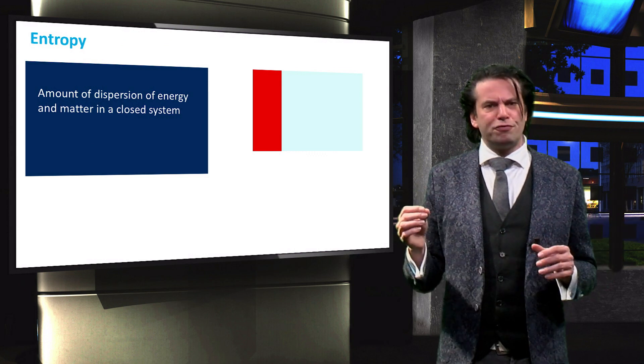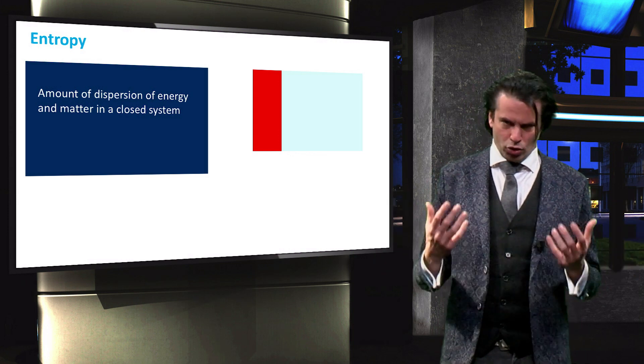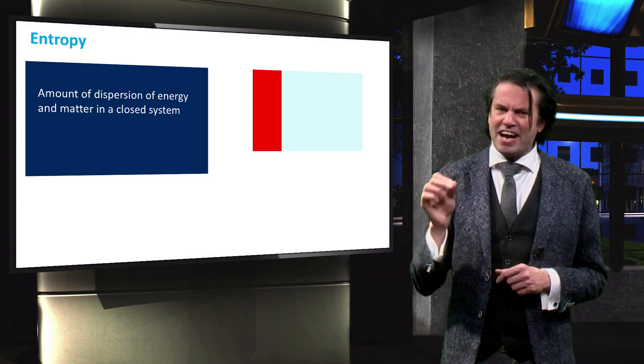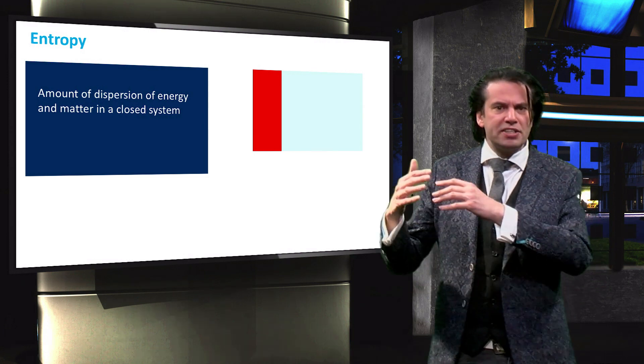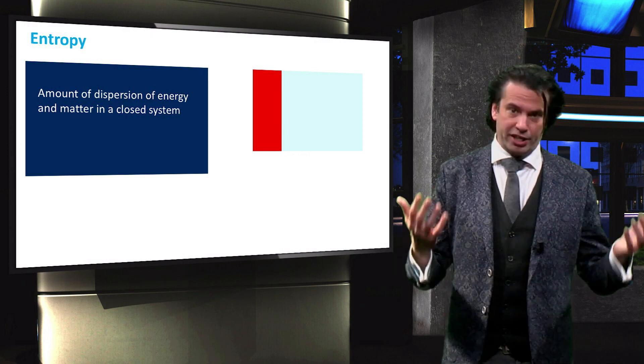The entropy is a measure of the amount of dispersion of matter and energy in a closed system. The fact that entropy only increases implies that the amount of dispersion will only ever increase.